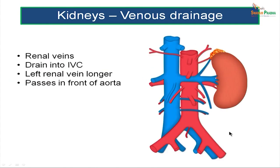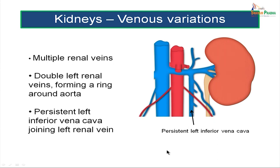Coming to the venous drainage, the renal veins are wide-bored veins which drain into the inferior vena cava. The left renal vein is longer compared to the right and passes in front of the aorta. Venous variations include multiple renal veins, a double left renal vein with one part passing in front of the aorta and another behind — forming a venous ring around the aorta — and a persistent left inferior vena cava, which is an embryonic structure draining into the left renal vein.